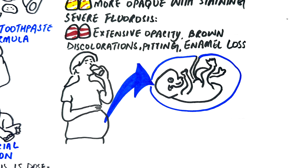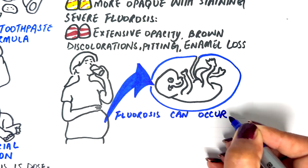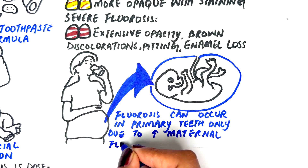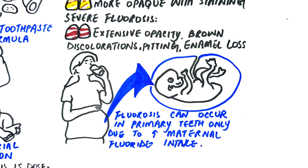Primary teeth are generally less susceptible, as most of their development occurs after birth, when direct fluoride exposure becomes more relevant. In areas with high fluoride concentrations in drinking water, all primary teeth can be affected; however, fluorosis is usually more noticeable in the later-erupting primary teeth, particularly the primary second molars, which develop over a longer period and are exposed to fluoride for an extended time.